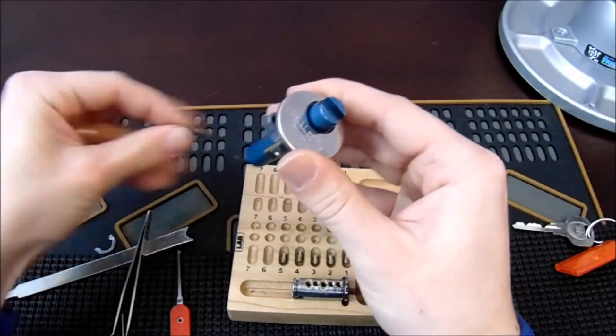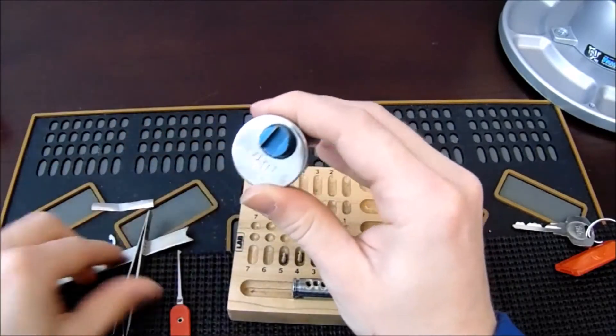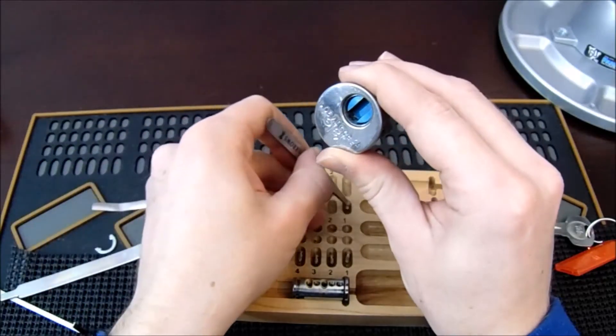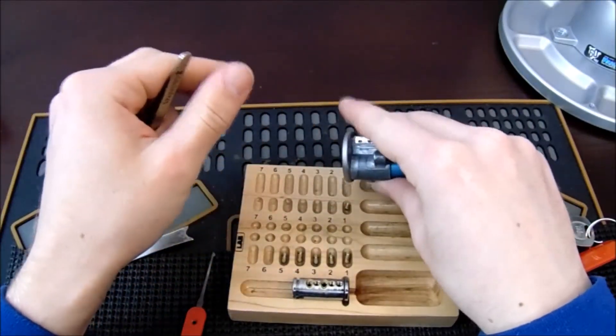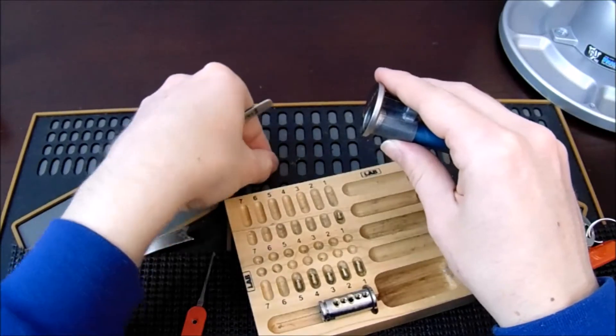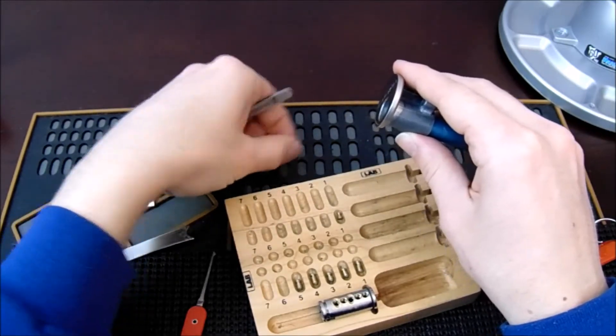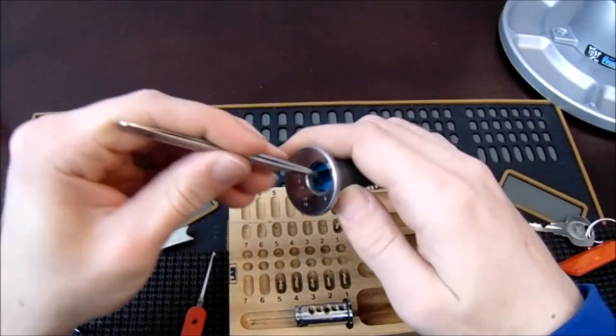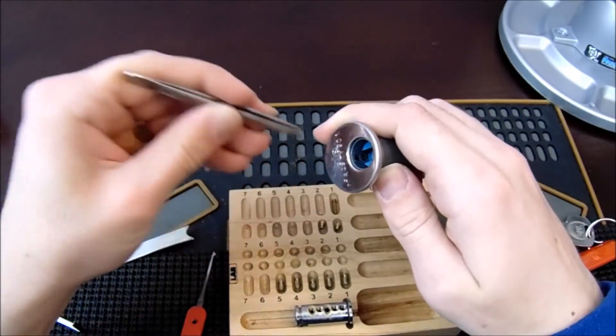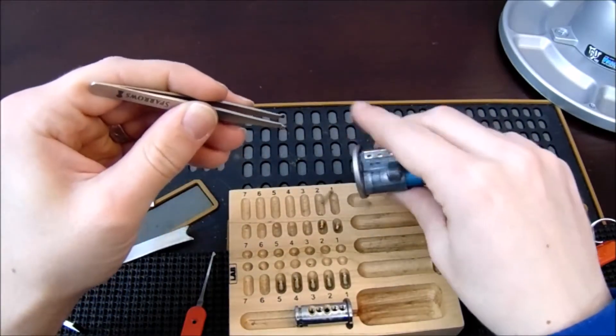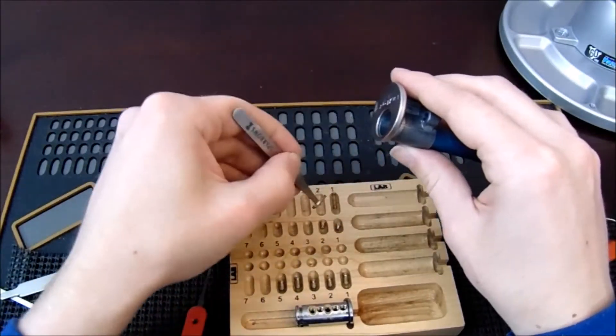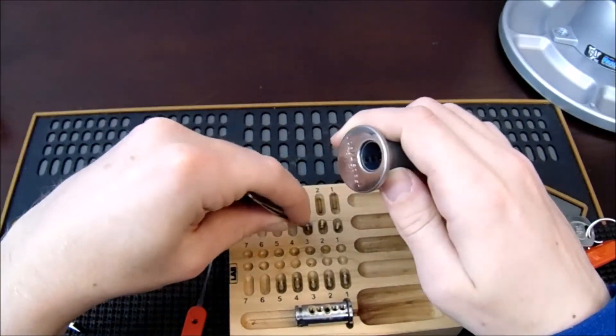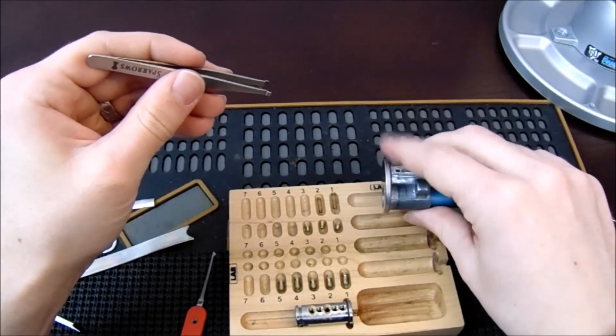In chamber one we have a spool and a copper spring. In chamber two we have a serrated driver pin and a copper spring. In chamber three we have another spool, nice thin one and a copper spring.